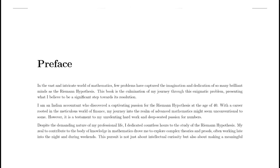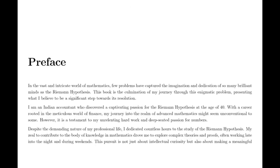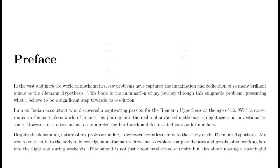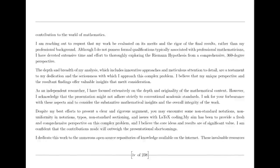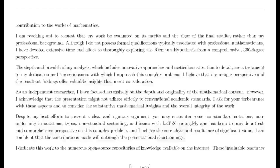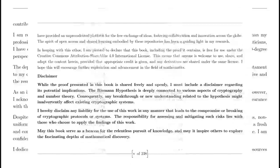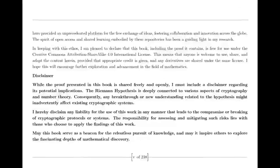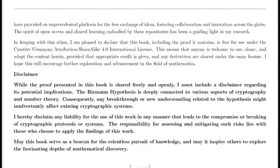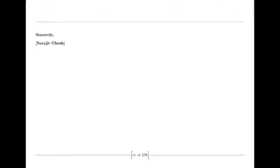Euler's initial work. We begin with the remarkable contributions of Leonhard Euler. In the 18th century, Euler made groundbreaking discoveries in understanding infinite series. He introduced the idea that the harmonic series — the sum of the reciprocals of the positive integers — could be expressed as a product over prime numbers. This revolutionary insight linked the harmonic series to the complex and profound properties of prime numbers, and was one of the first indications of deep connections between primes and series.